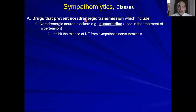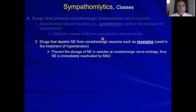Class number one: noradrenergic transmission blockers. This includes noradrenergic neuron blockers — drugs that inhibit the release of norepinephrine from the nerve terminals, such as guanethidine and bretylium. The next subclass is drugs that deplete norepinephrine from noradrenergic nerve terminals, such as reserpine. Reserpine prevents storage by blocking carrier VMAT, making norepinephrine liable to inactivation by monoamine oxidase enzyme.